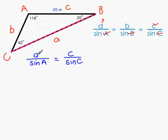So side A is the one we're trying to find, so we can still call that A for the moment. Angle A was 118 degrees, so that's sine 118 degrees. That's equal to side C, which is 25, divided by sine C, and we know angle C is 42, so that's sine 42.